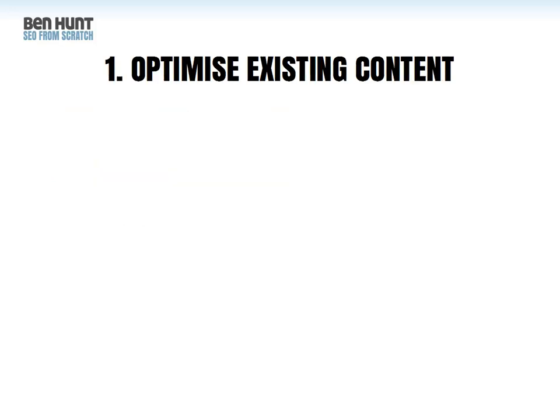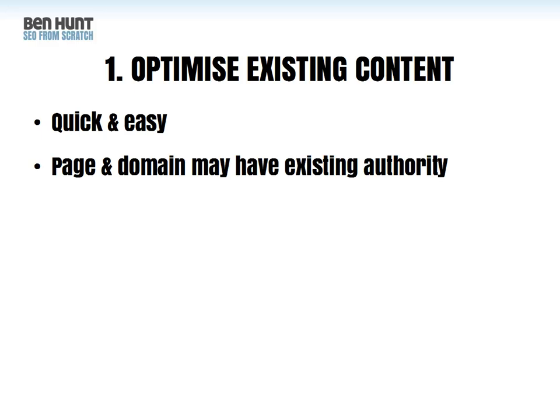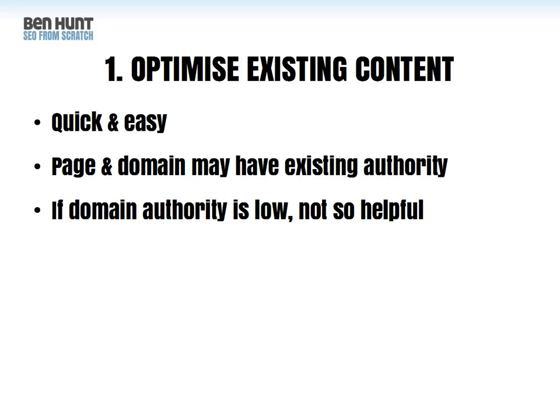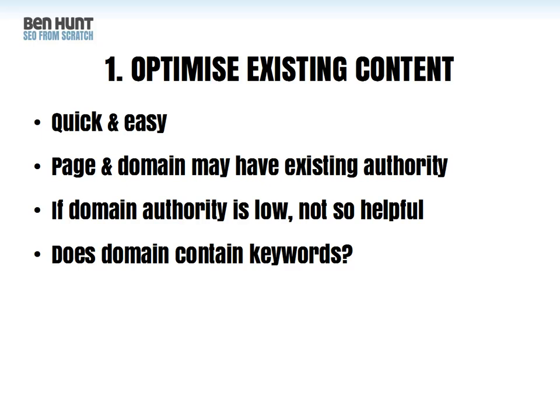First, optimizing existing content. On the plus side, it's about as quick and easy as you can get. The page may already have existing authority, and it may already have links pointing to it from other websites. Also, if it's on a domain that already has links, that domain will have authority too — so you're not going from a standing start. However, if the domain authority is low, that may not be so helpful. And does the domain name contain the keywords you want to target? If it doesn't, you may find it easier to rank under a different domain.